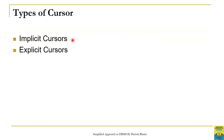We have already discussed that there are two types of cursors. One is implicit cursor and the second is explicit cursor. Implicit cursors are created implicitly by the Oracle server whenever we execute a DML statement in PL/SQL. The name of implicit cursor is SQL and we have already discussed the use of implicit cursor.